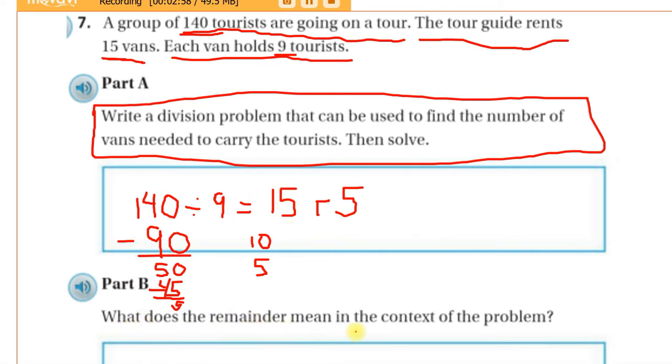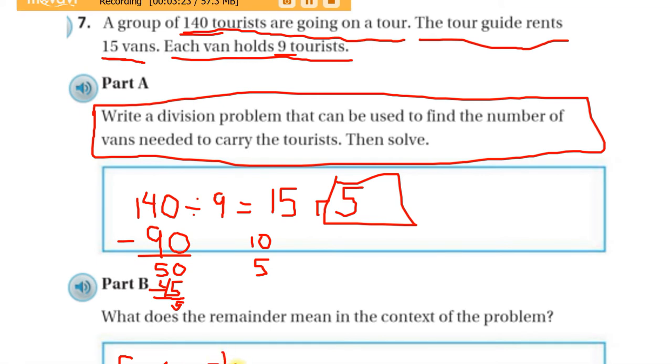What does the remainder mean in the context of this problem? So, what does this remainder mean for this problem? Well, it means we need 15 vans, but there's going to be 5 people left over. So, 5 people with no ride. So, that's what I'm going to write. 5 people will not have a ride.